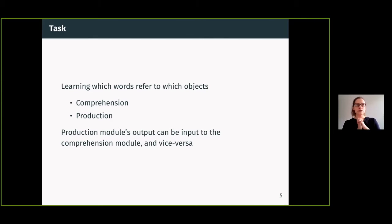The thing about our model is that we have these two modules, but they can actually feed into each other. The comprehension module sees a bunch of objects, hears a word, outputs the object that it thinks is the most likely reference.